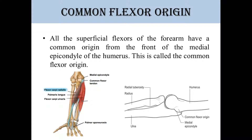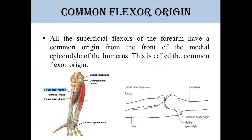A common flexor origin — all the superficial flexors of the forearm have a common origin from the front of the medial epicondyle of the humerus.